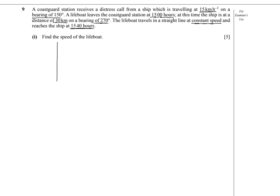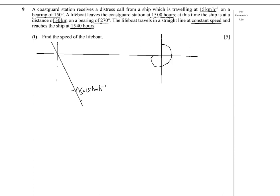Let's draw the velocity vector of the ship, which is travelling at 15 km per hour on a bearing of 150 degrees. Now let me draw a line which will be the velocity vector. This is the velocity vector of the ship, Vs, and Vs is 15 km per hour. Now let's draw the position of the lifeboat, which is 30 km away on a bearing of 270 degrees.